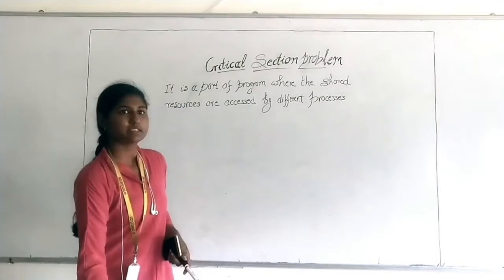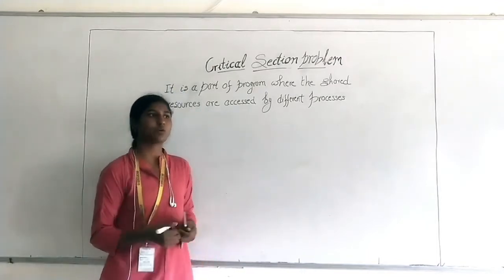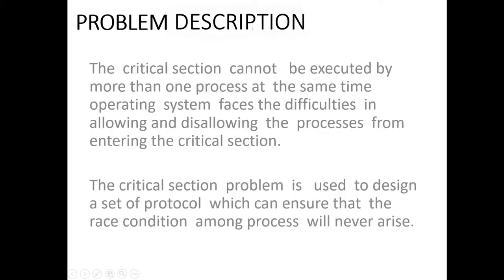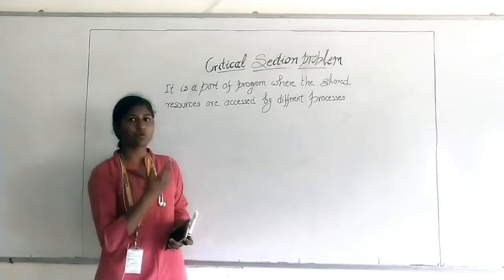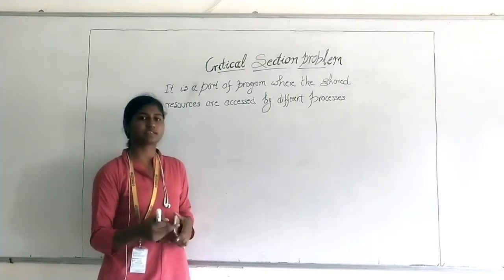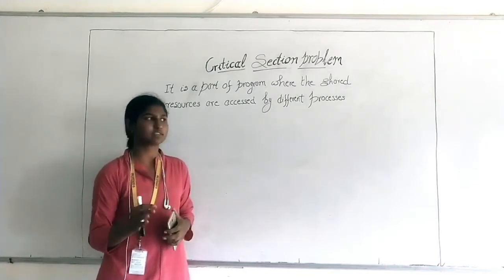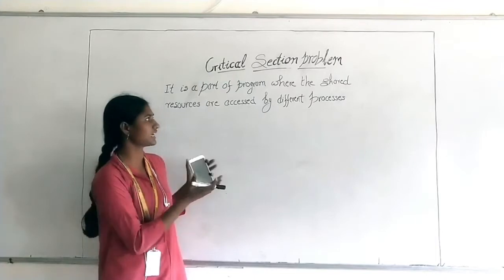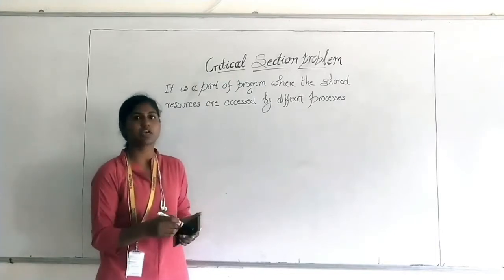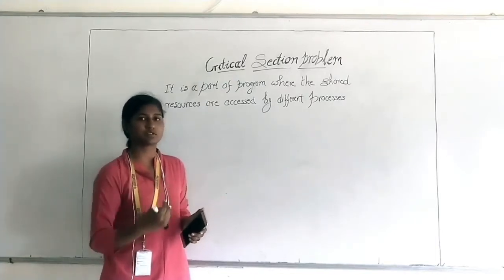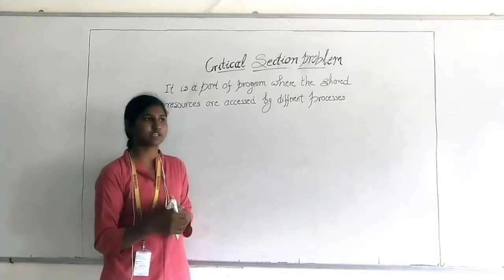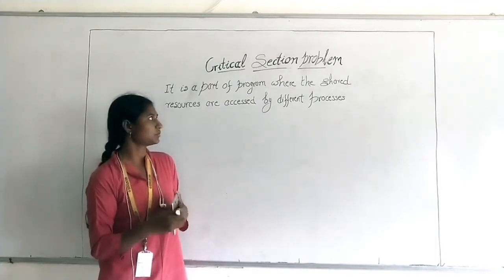So what is the critical section problem? The problem is that when we have more than one process — two processes or n number of processes — and they are going to use the same critical section, there is a problem because which process has to come first and which has to come after.